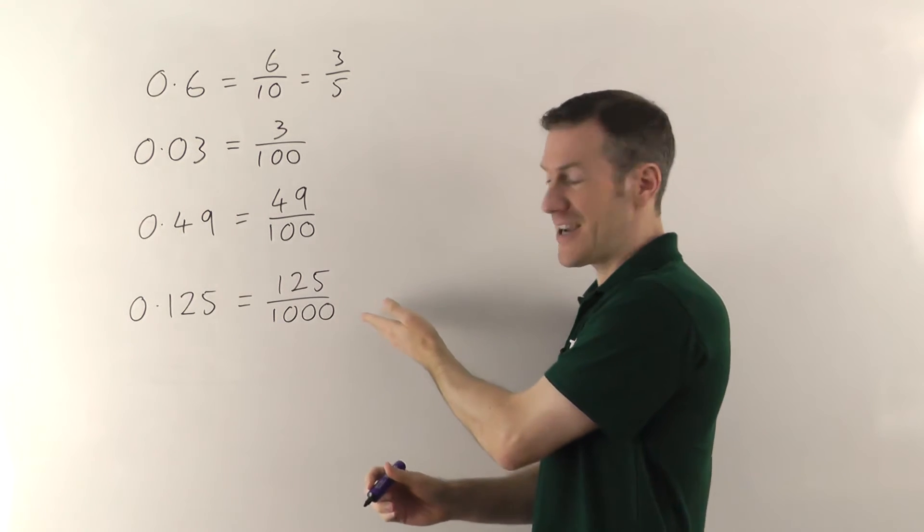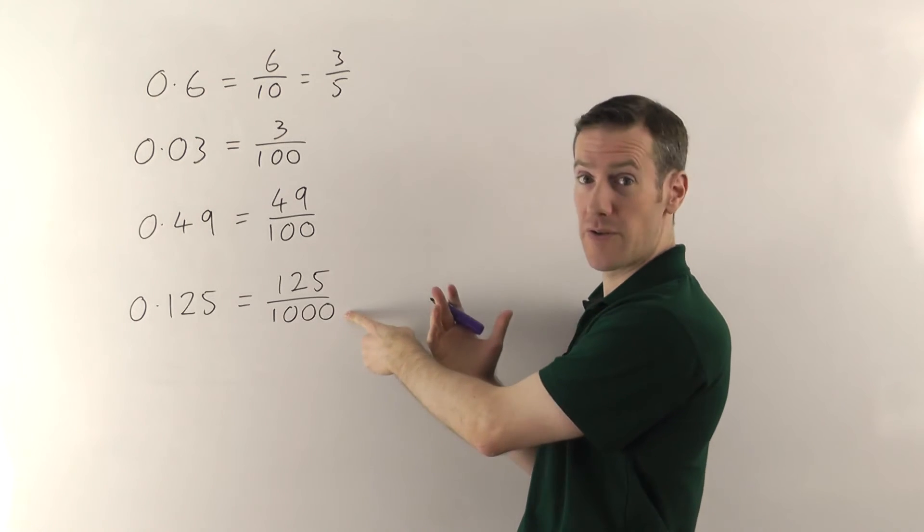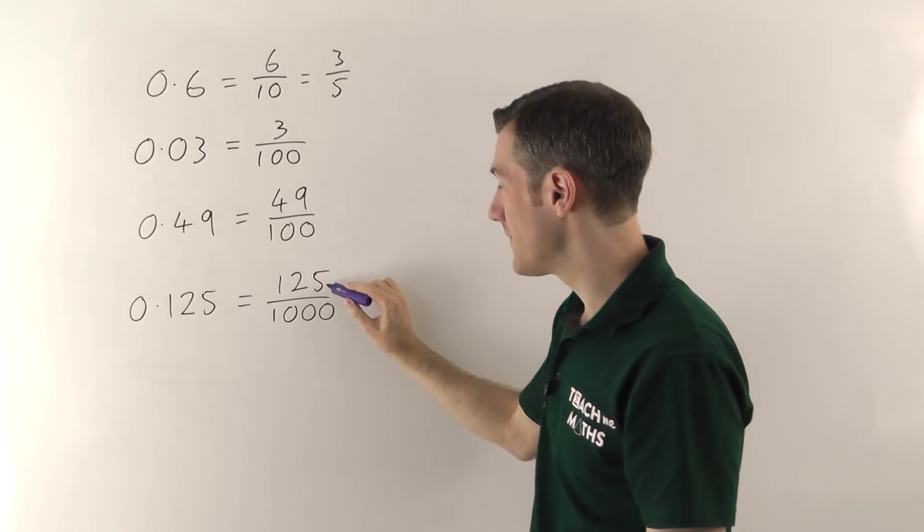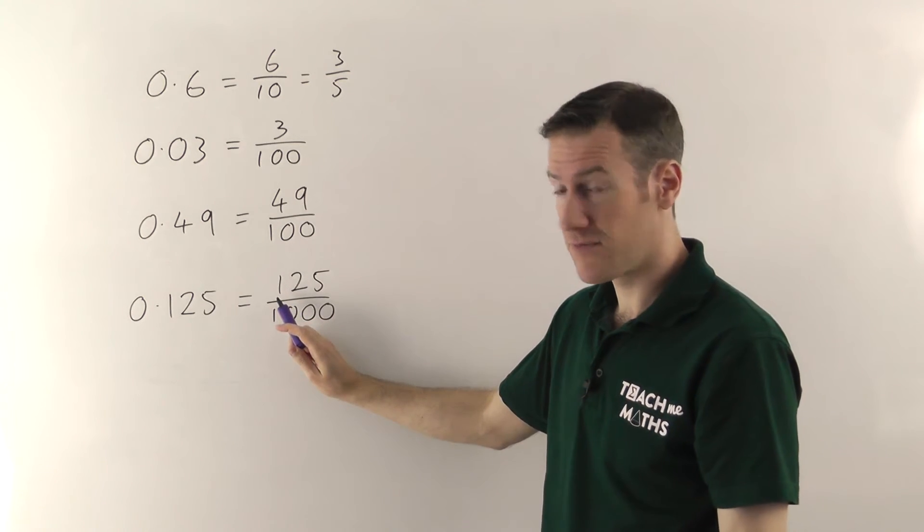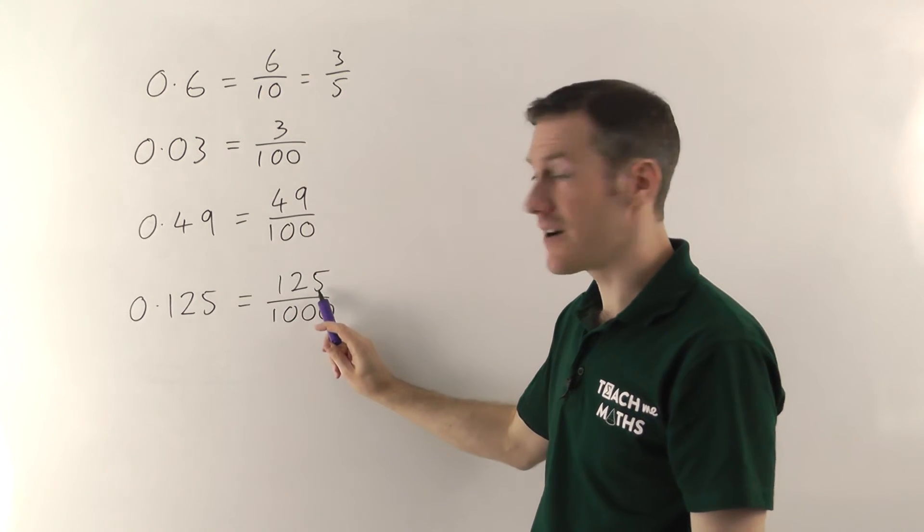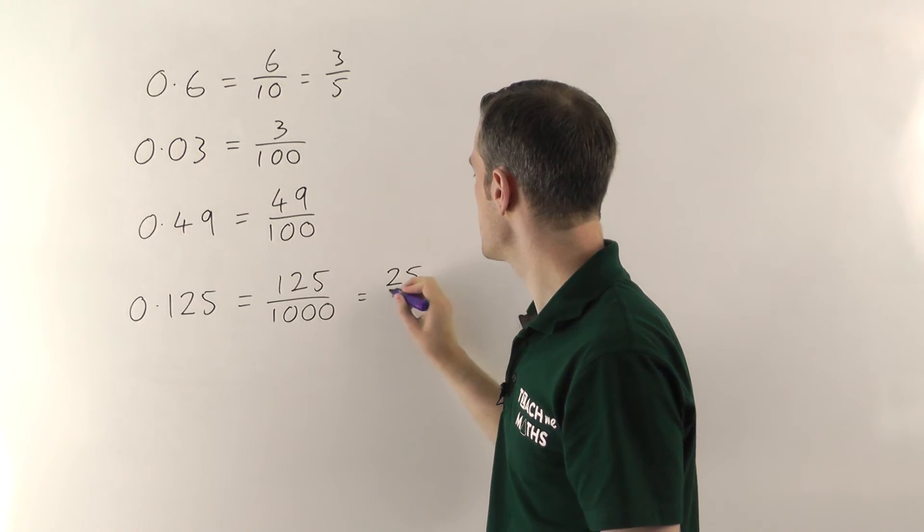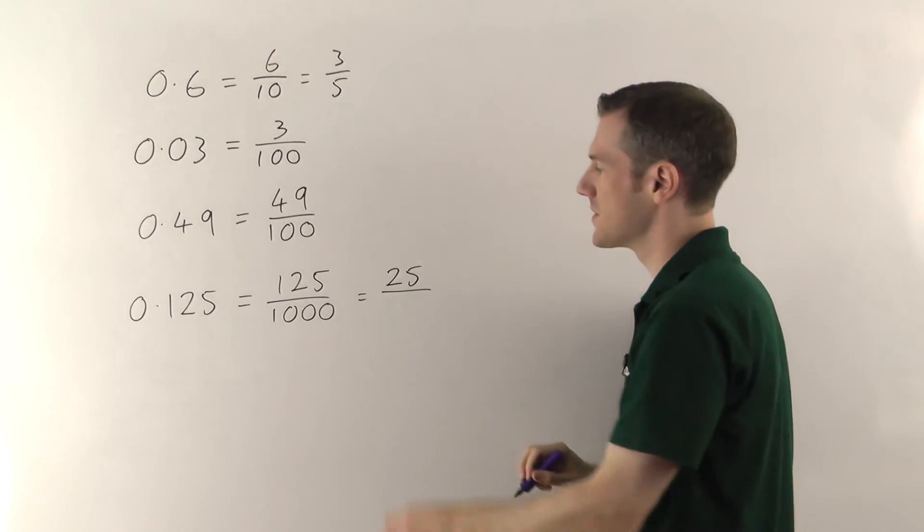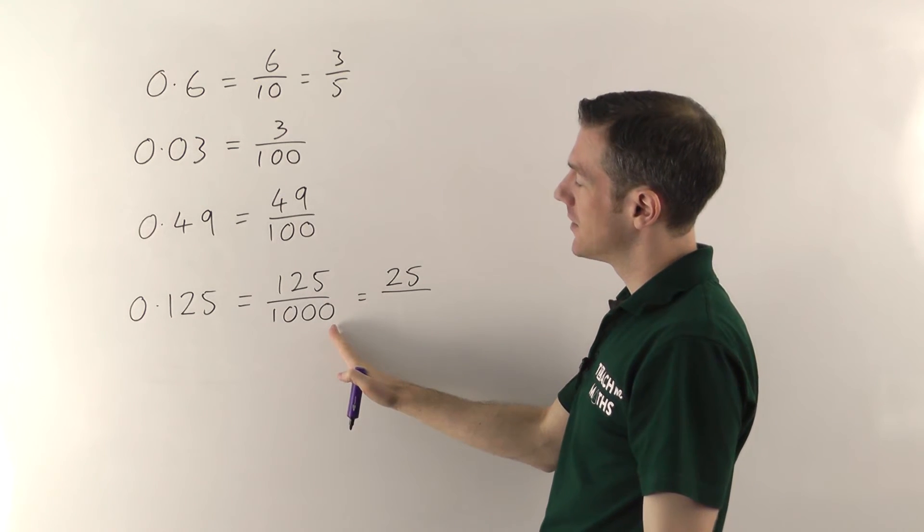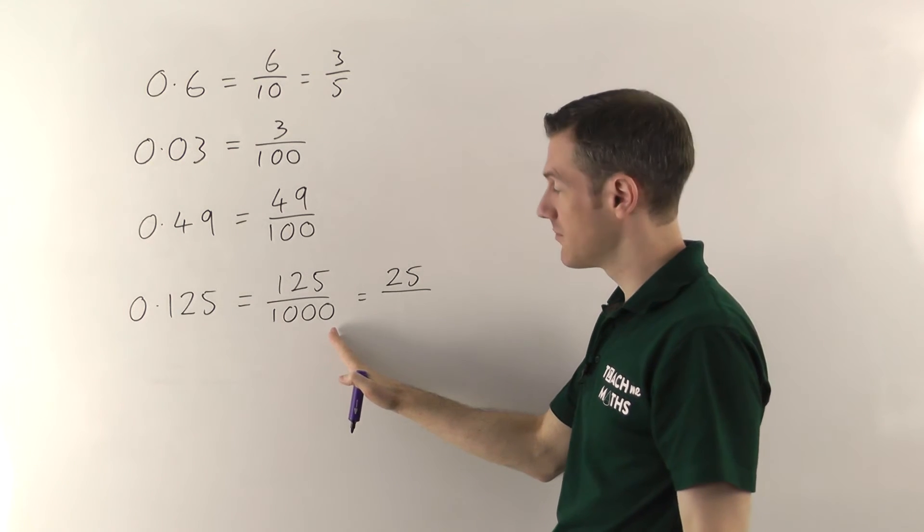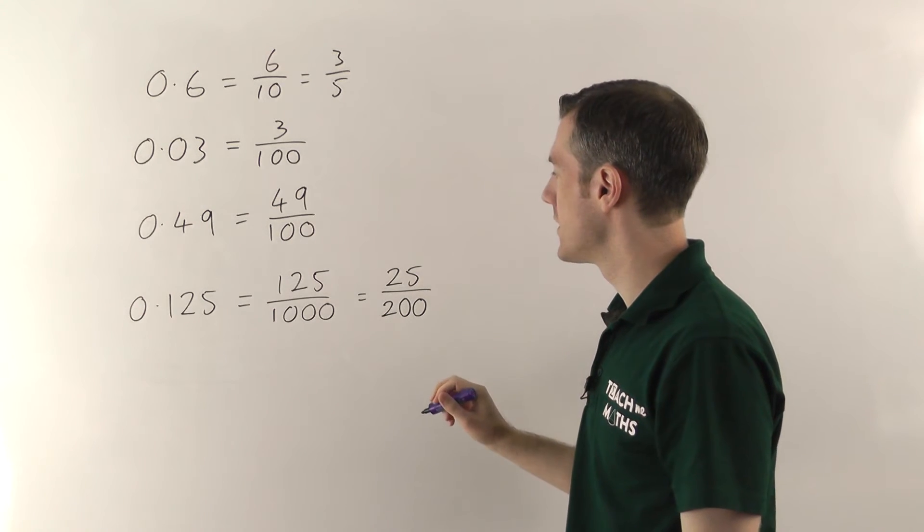And then we have the slightly difficult job of cancelling this down. Now, 5 will go into both of these. So you've got 5s into 125. Well, 5s into a hundred would go 20 times. 5 times 20 is 100. And 5 goes into 25 five times. So 20 times plus 5 times means that's 25 times into 125. And 5s into a thousand, well, 5 lots of 200 would be a thousand. So that's going to go 200 times.